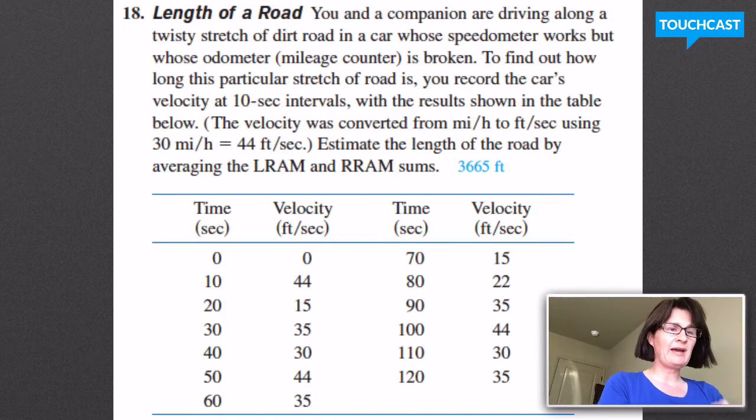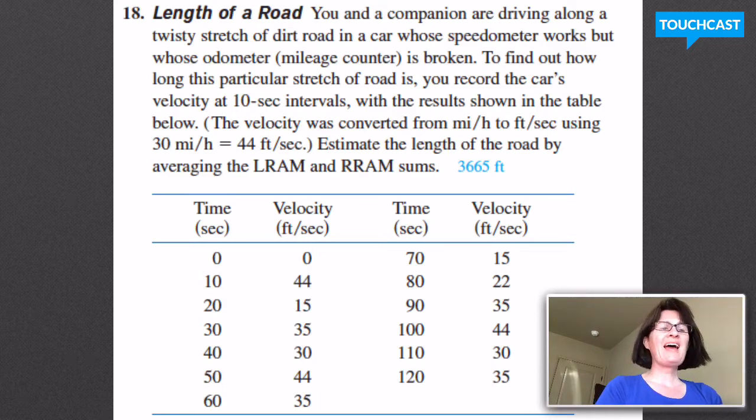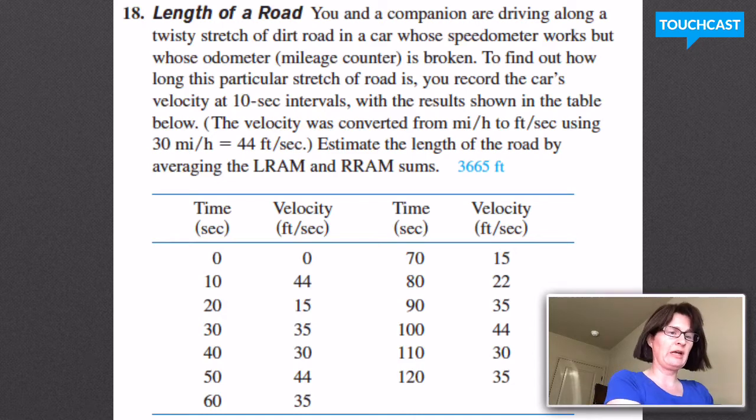Can you estimate how far you've gone? That's going to be our job here. What we have is a table of ordered pairs essentially: the time since you've left wherever you left from and your velocity at that exact time.